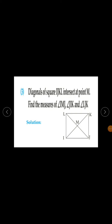Question number 3 from practice set 5.3. Diagonals of square I, J, K, L intersect at point M. Find the measures of angle IMJ, angle JIK, and angle LJK. IJKL is a square and diagonals IK and LJ intersect at point M.